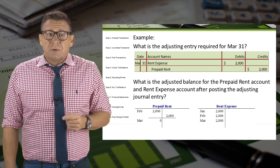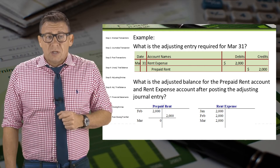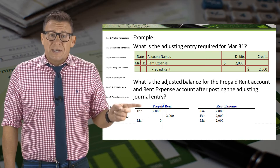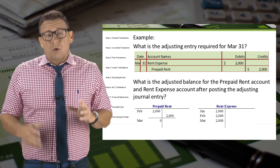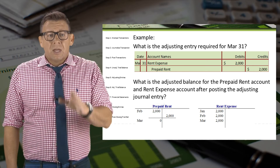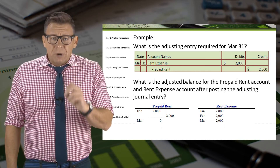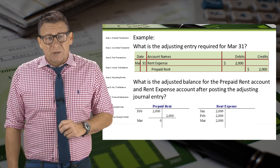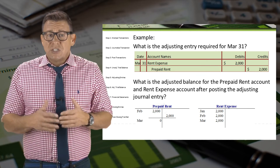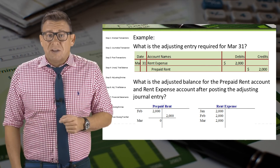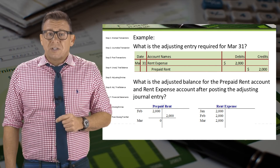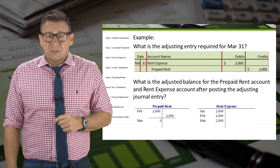Finally, we make the adjustment for March. Again, we debit the expense account rent expense and credit the asset account prepaid rent for $2,000. Notice now that the prepaid rent account has a zero balance, as Morrissey has no more asset remaining at the end of March. Rent expense for March has also been increased by $2,000.